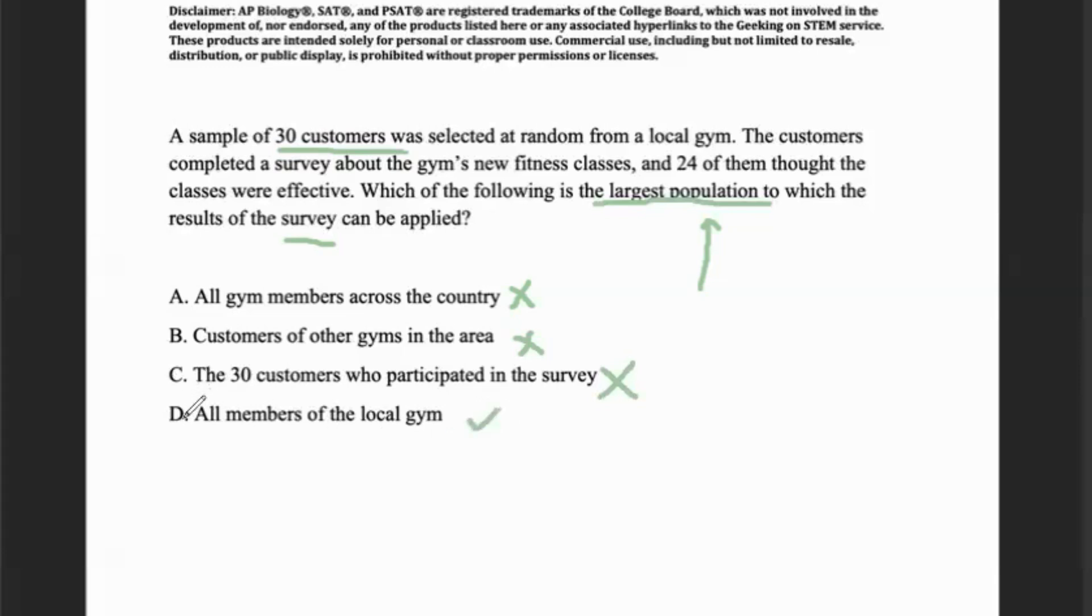See, the thing is between C and D, we're selecting 30 customers at random and we don't know which 30 we're selecting. But we do know off the bat that we are selecting from the local gym. So the largest population we can include are all the individuals in that local gym, because we know that we're taking for sure 100% those members from the gym. So because of that, the best answer choice is D.